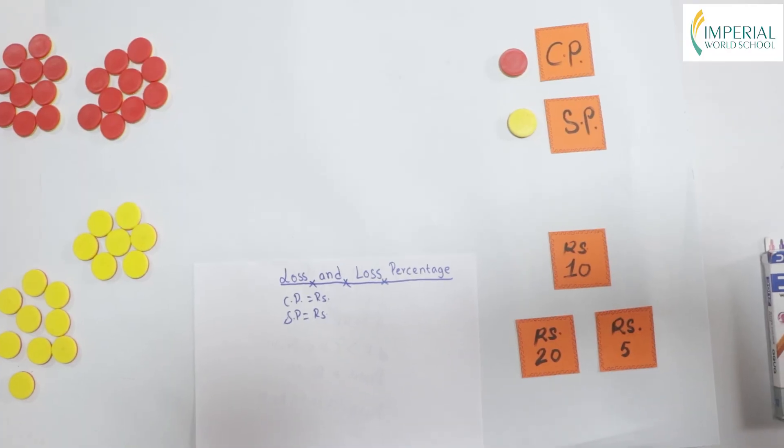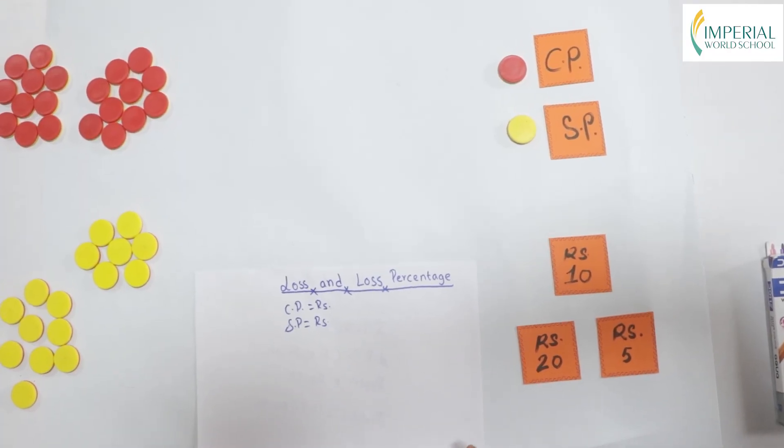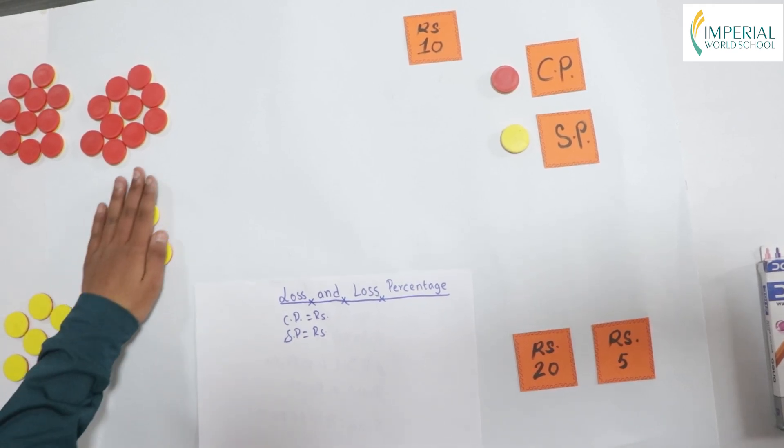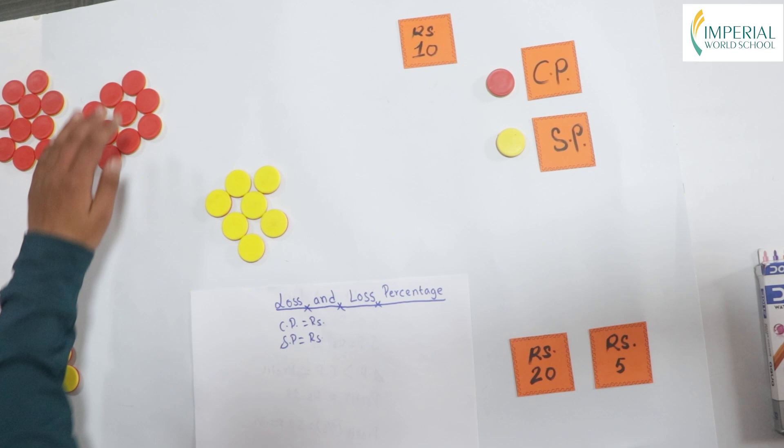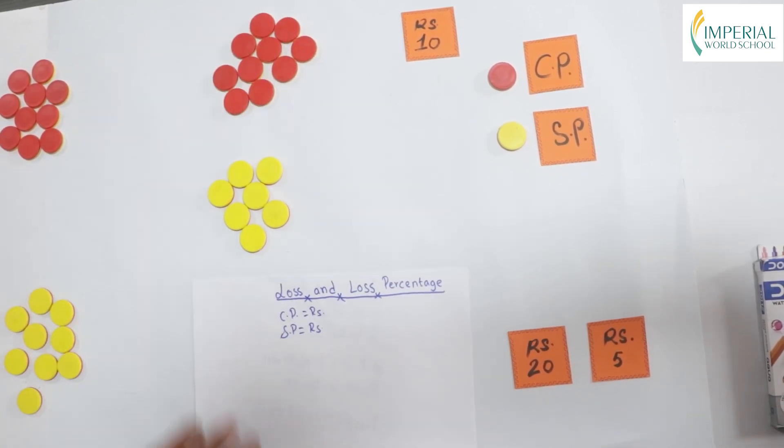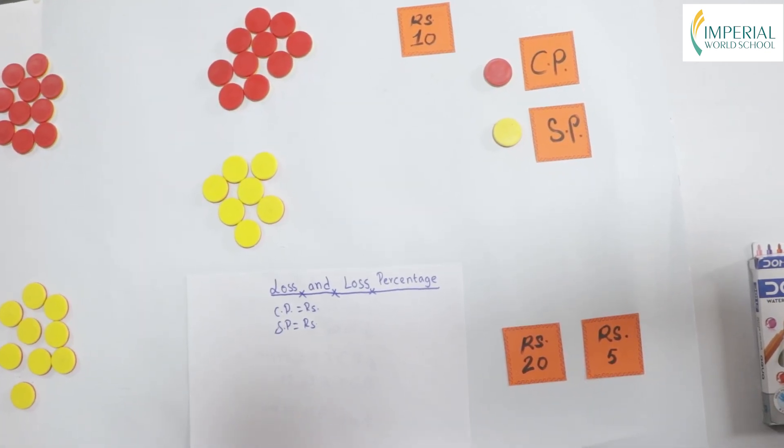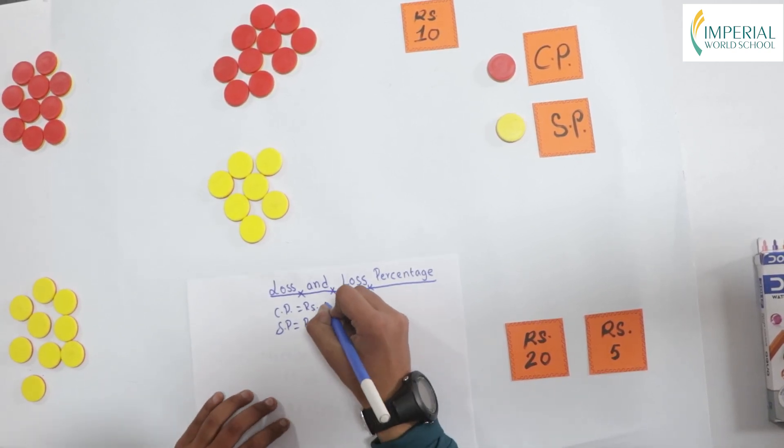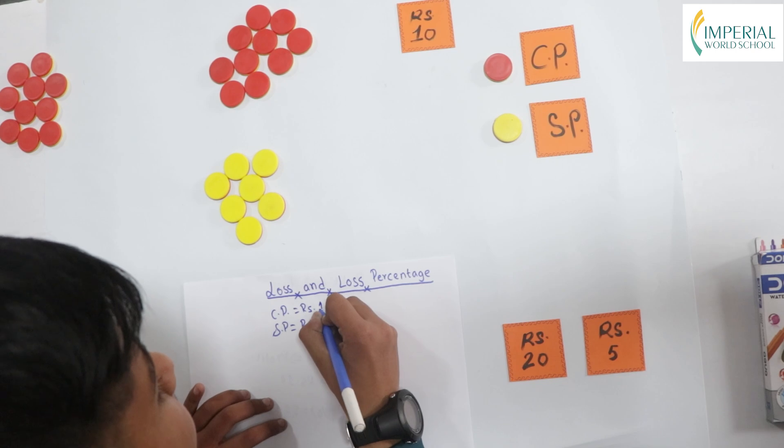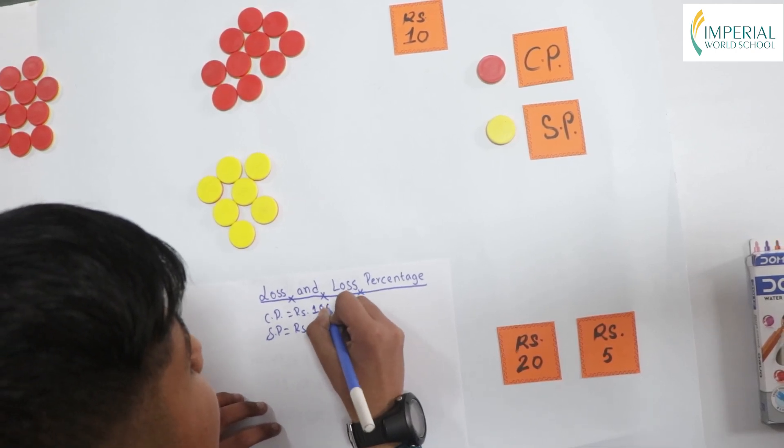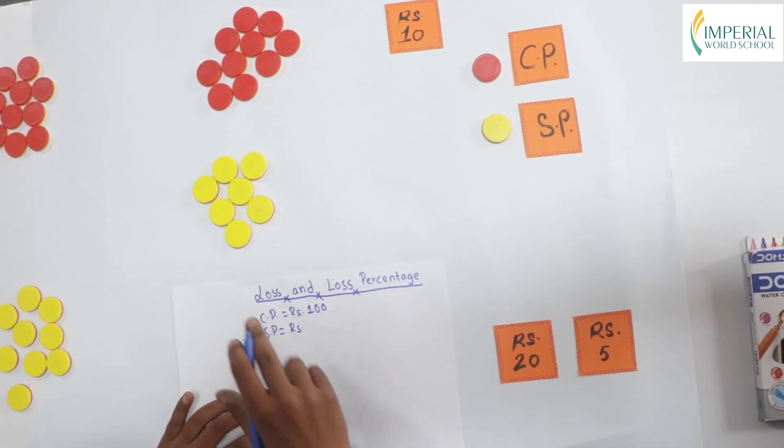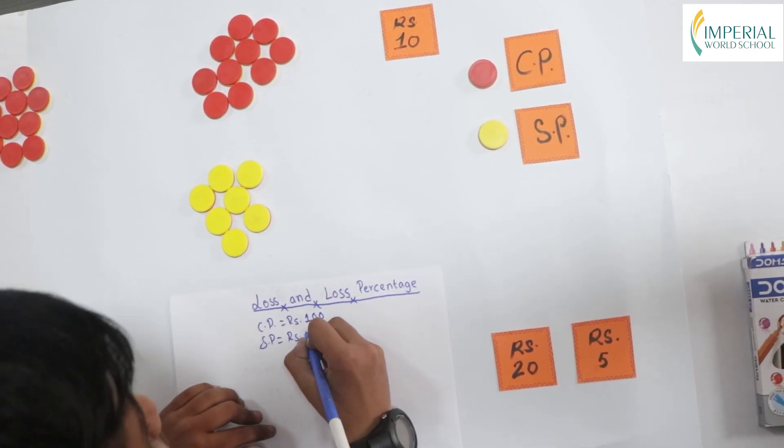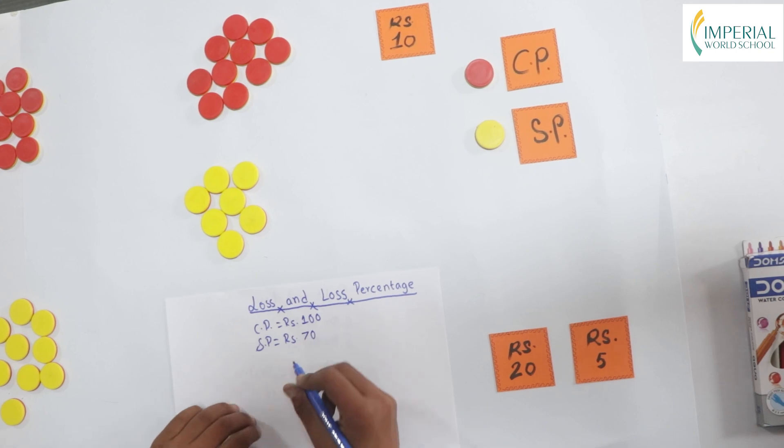Now, let's find our loss and loss percentage. Let's denote every tile as rupees 10. I have taken 7 pieces for selling price and 10 pieces for cost price. Since per piece is rupees 10, our cost price will be 100 and our selling price will be 70 rupees.